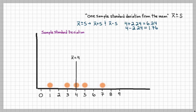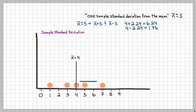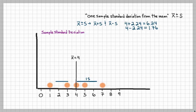We draw a line from 6.24 to the mean — that is one standard deviation, labeled +1S. On the other side, we draw from 1.76 to the mean — because it's on the left side, that's negative one standard deviation, labeled −1S. The convention is: anything to the right of the mean is positive, anything to the left of the mean is negative.